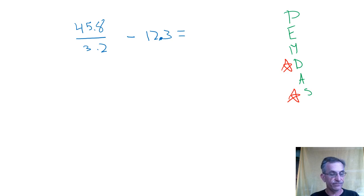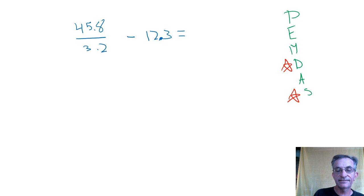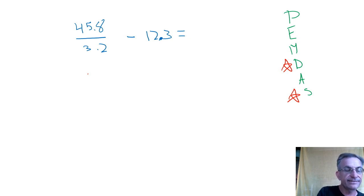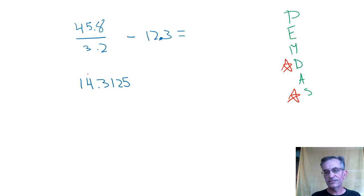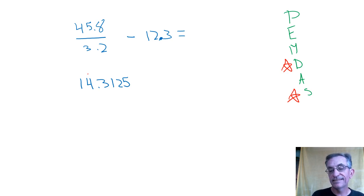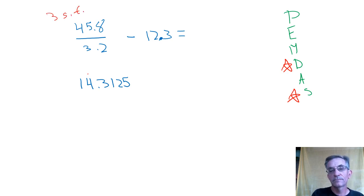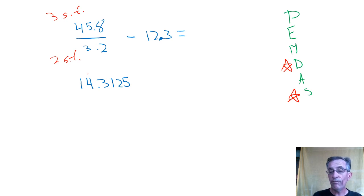I do the division on my calculator — 45.8 divided by 3.2 — and my calculator says 14.3125. Let's just pretend this was the whole problem and I wanted to round. I would look at the numbers I'm given. Since we're dividing, we go with sig figs: 3 sig figs in 45.8, 2 sig figs in 3.2. When dividing, you go by the least amount of sig figs, so that answer should be rounded to 14.